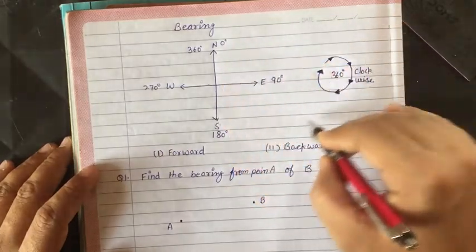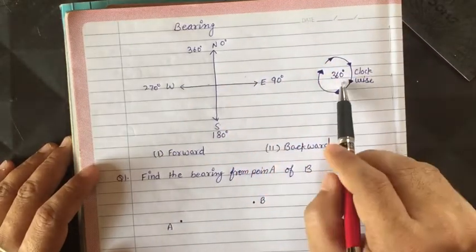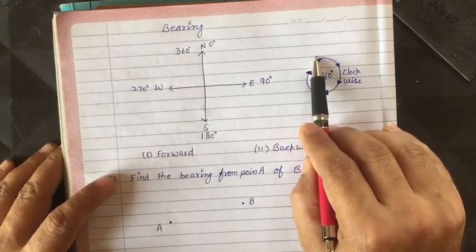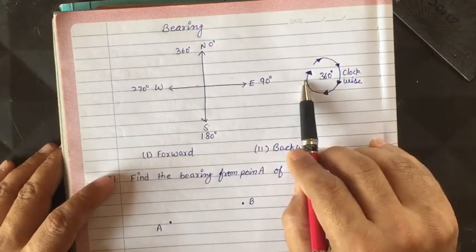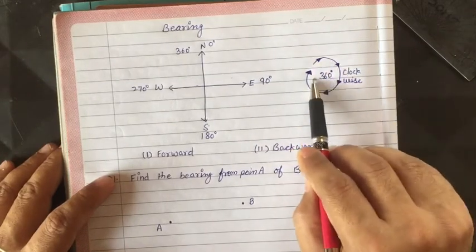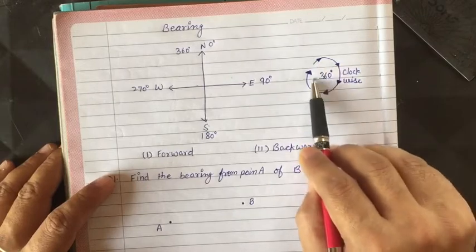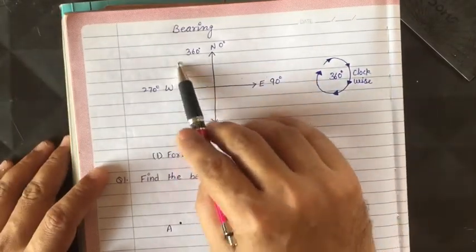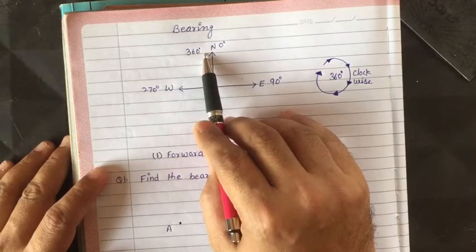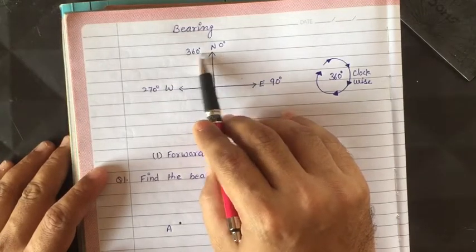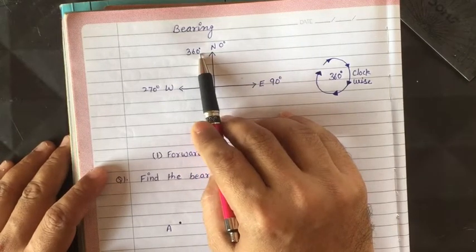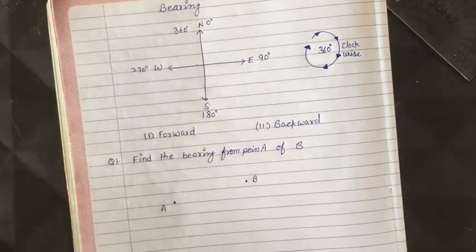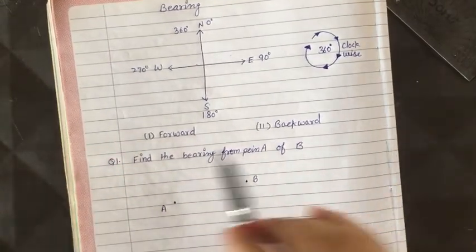We need to measure bearing in a clockwise direction — always clockwise. Moving 360 degrees brings us back to north. There are two types of questions they will ask: the first is called forward bearing, and the second is called backward bearing.